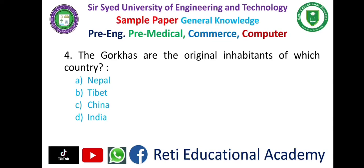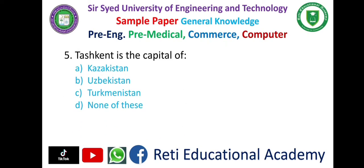Question number four: The Goraks are the original inhabitants of which country? Options: A) Nepal, B) Tibet, C) China, D) India. The correct answer is A, Nepal.